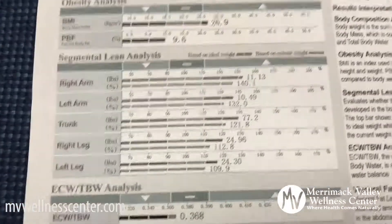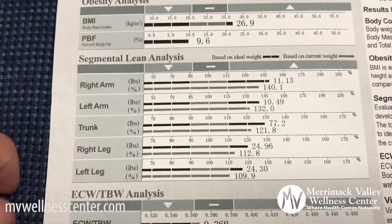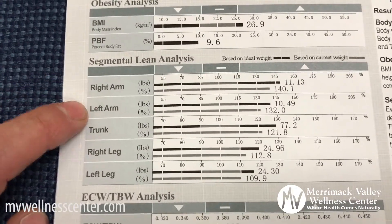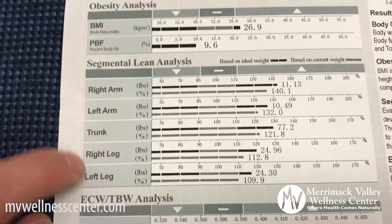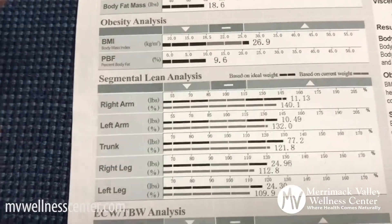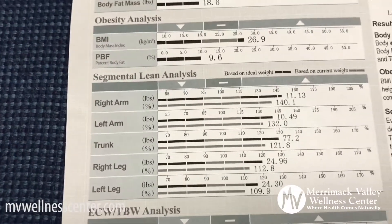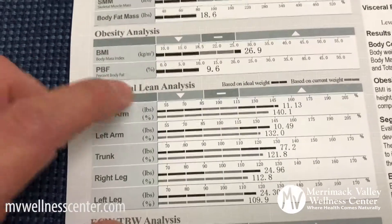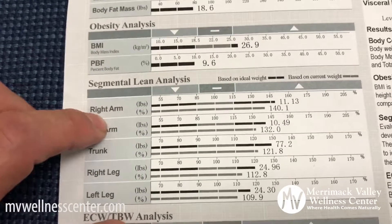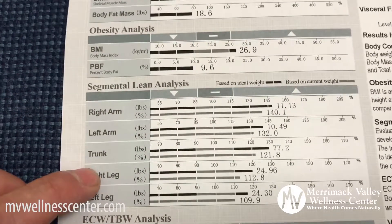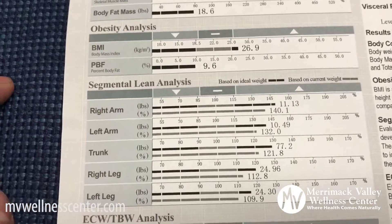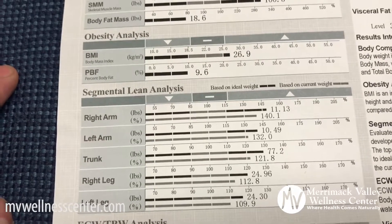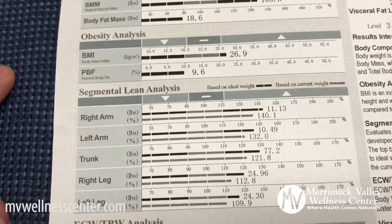Down here is a segmental lean analysis. It tells me the lean mass between right and left arm, trunk, and right and left leg. If you have any discrepancies, you can see my right arm is a little bigger than my left arm, and same with my right leg versus left leg — so I have some imbalances. They're not extreme but they're things to work on.